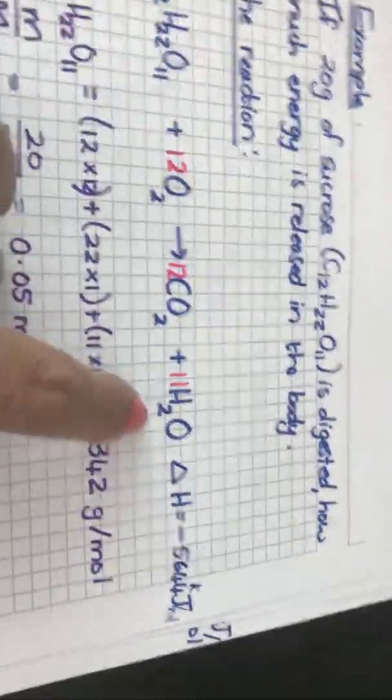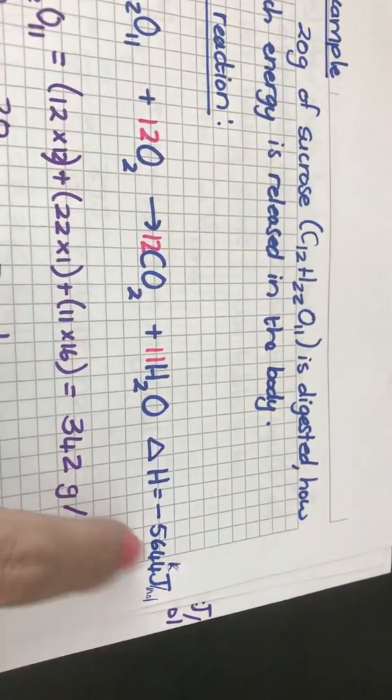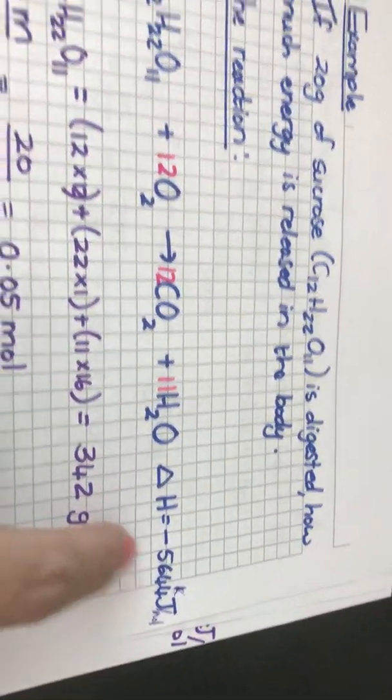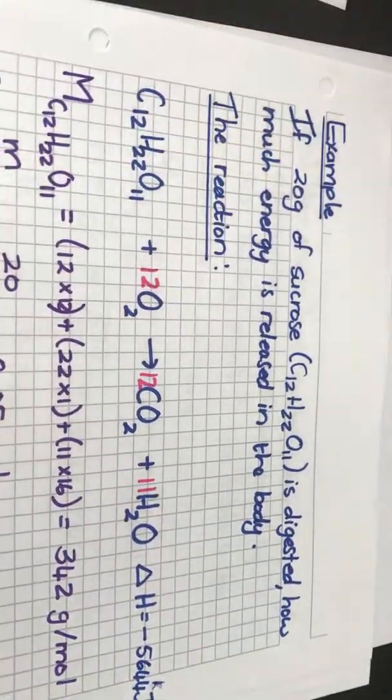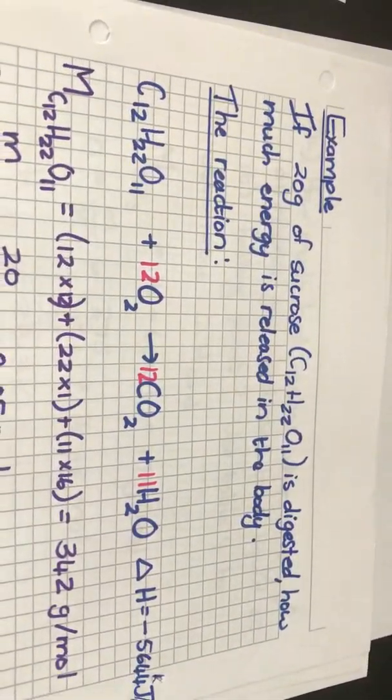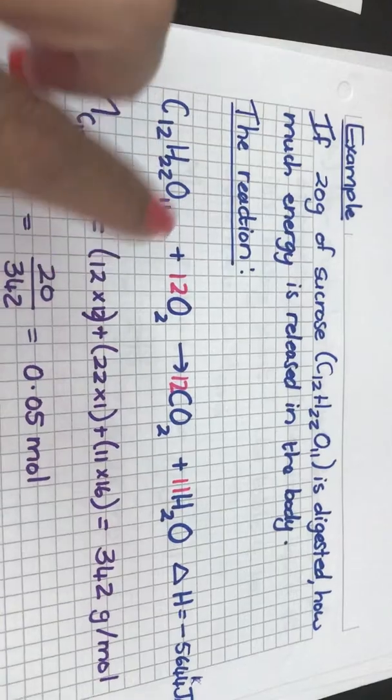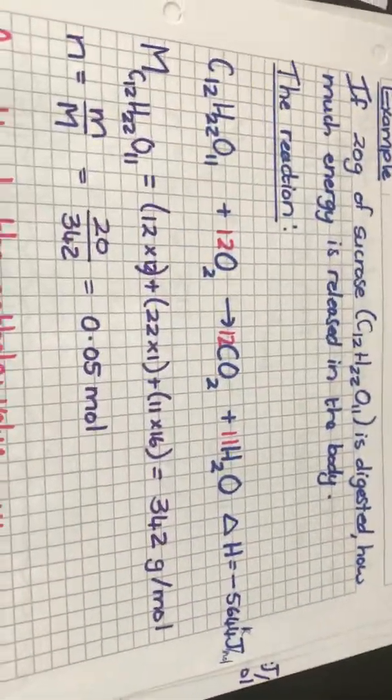Now for combustion my change in enthalpy will always be exothermic, the heat is being released in the reaction. In this example if I have 20 grams of sucrose and I eat it, it gets digested by the body and the energy is then released into the cells where cellular respiration takes place.